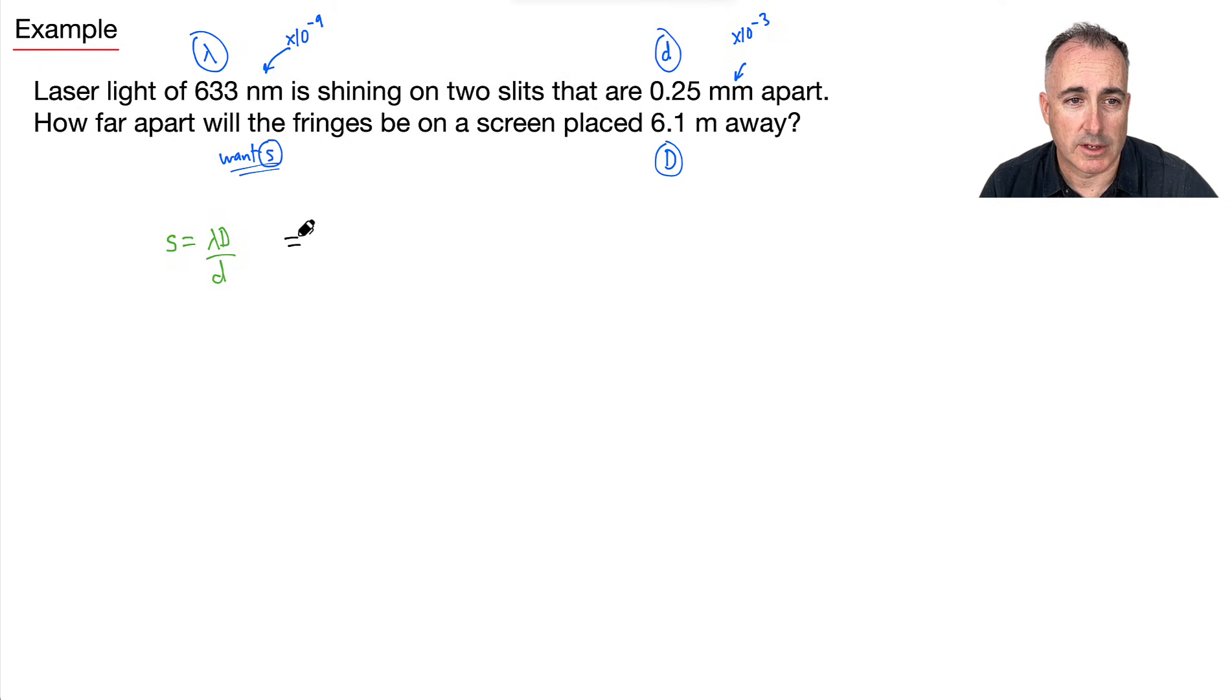So that means I have s equals, let's see, wavelength, which is 633 times 10 to the power of minus 9. All that times capital D, which is 6.1 meters. Divide that by lowercase d, which is 0.25. And don't forget, times 10 to the power of minus 3.